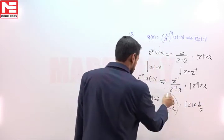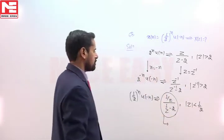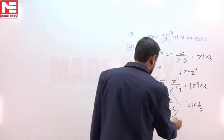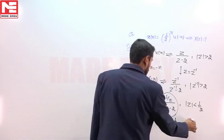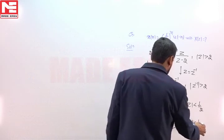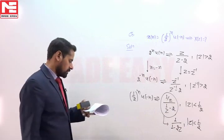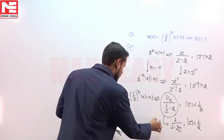If we rearrange this term by multiplying numerator and denominator with Z, then we can write it as 1/(1 - 2Z) with ROC |Z| < 1/2. If we look at all four options, then option C will satisfy.